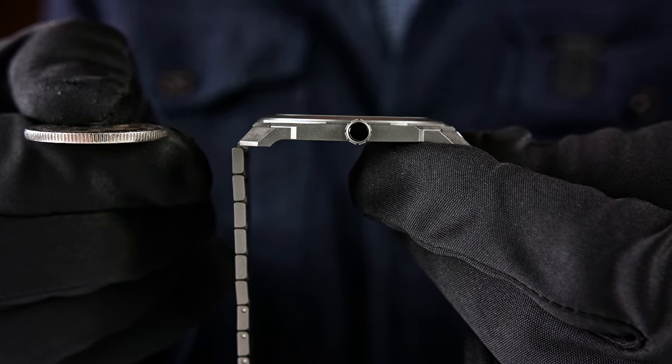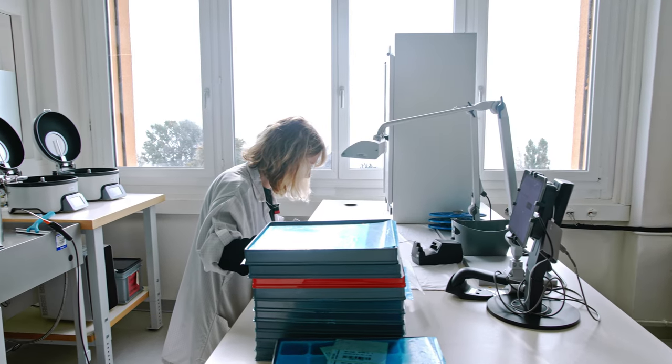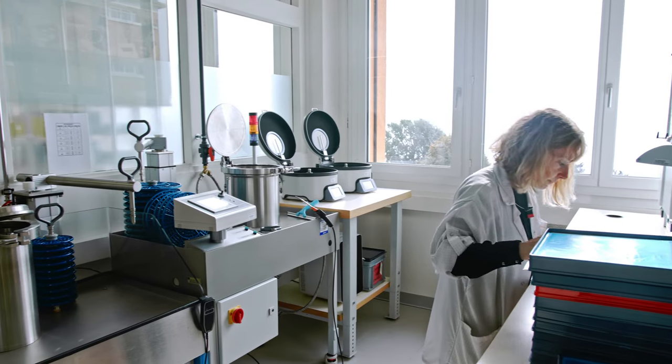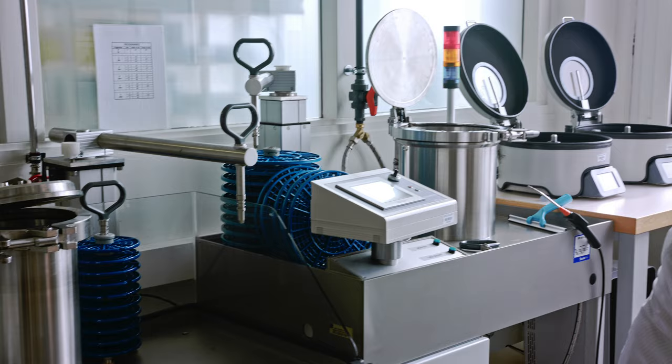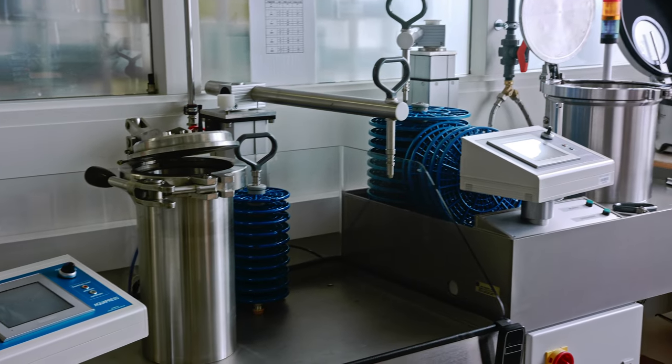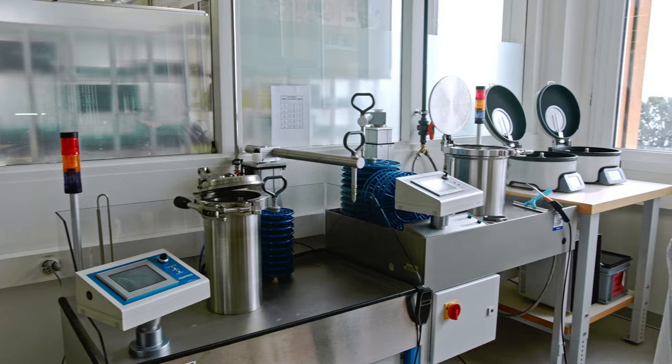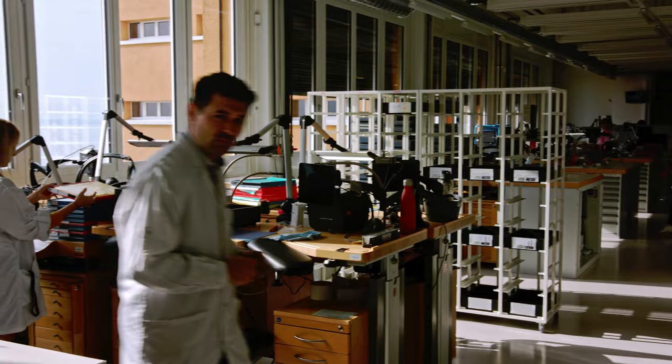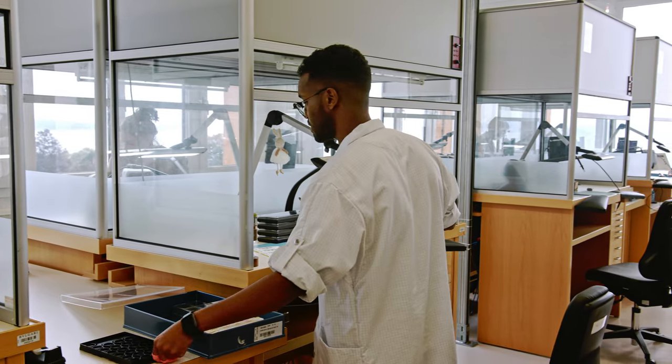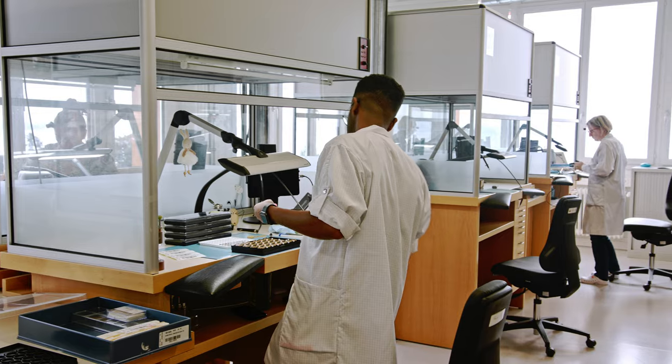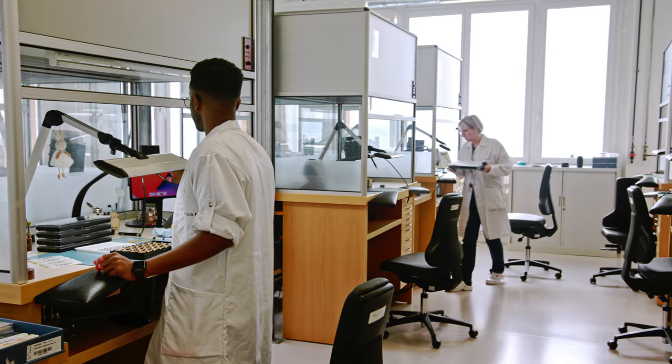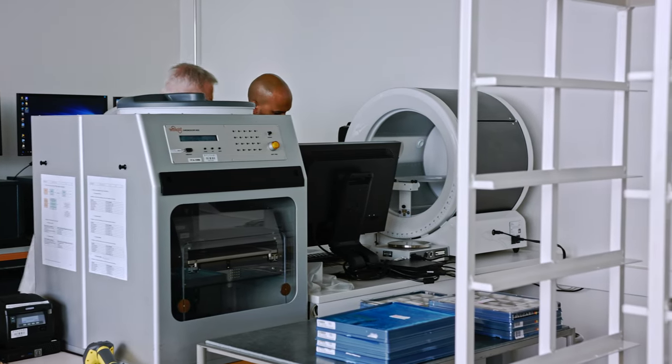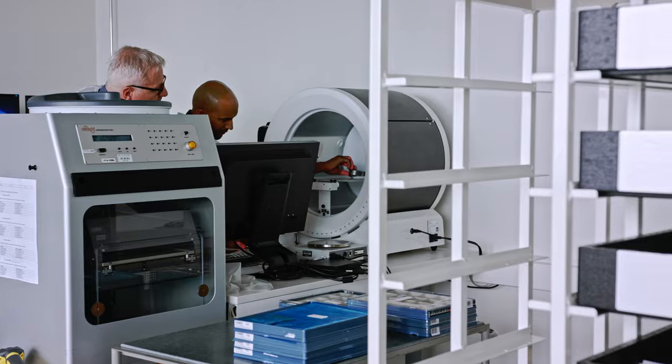After the encasing is done, the watch is again being checked for water tightness. So a waterproof check is done here. Then you do have another check of the accuracy of the watch. We learned yesterday that the watchmaker is of course regulating the movement, but once the movement is being encased it is again checked that the tolerances are also guaranteed. Some fine adjustments might have to be done. And this is what these gentlemen you see on your screen are doing before a watch is ready to be delivered.